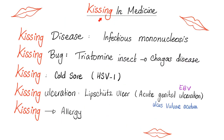Here is one of my epic Medicosis compilations: kissing in medicine. Kissing disease is mono — infectious mononucleosis. The organism is usually EBV; if not EBV, it could be CMV. Next, the kissing bug is the triatomine insect, which causes Chagas disease — American trypanosomiasis.